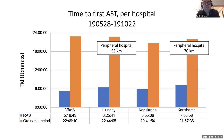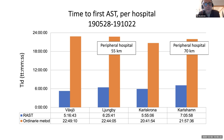Results broken down by hospital show that even peripheral hospitals — Ljungby and Karlshamn, roughly an hour's drive from the main lab — add only the transportation time to the overall time to first AST. Transportation adds approximately one hour and ten minutes of handling time. This demonstrates that outsourced blood culture cabinets with good transportation logistics work very well, and that having cabinets in smaller hospitals is very feasible as long as logistics are properly organized.